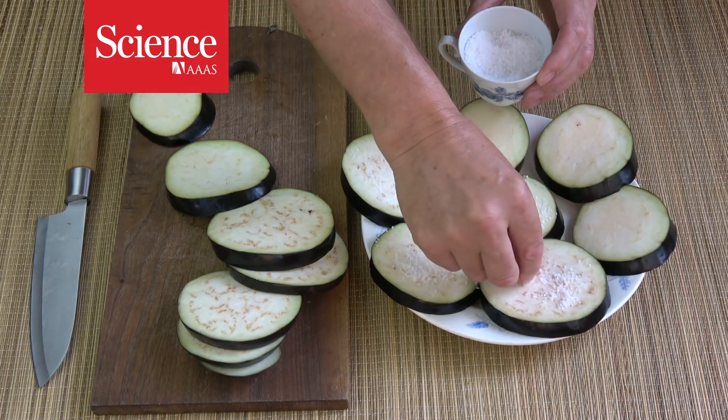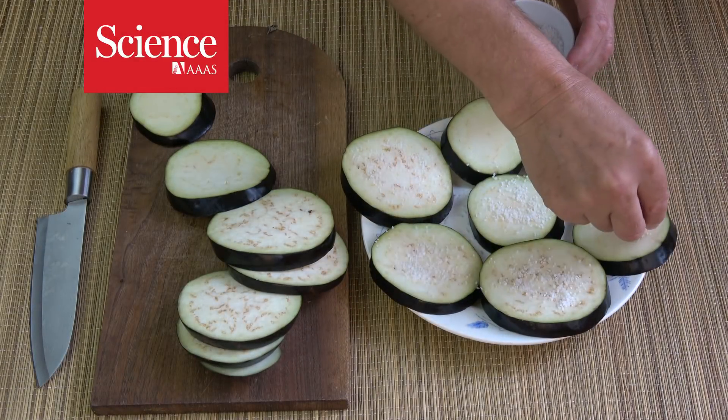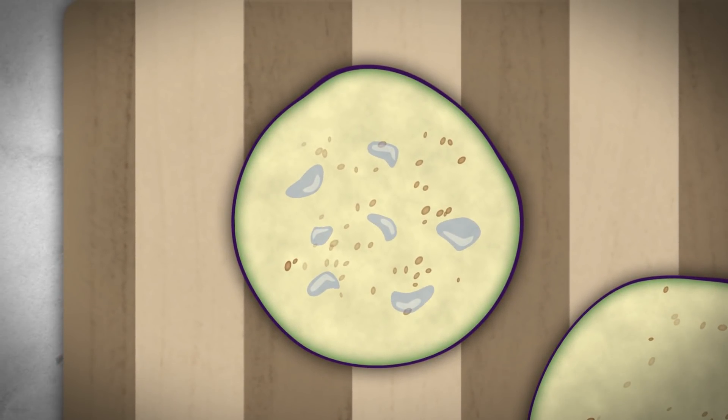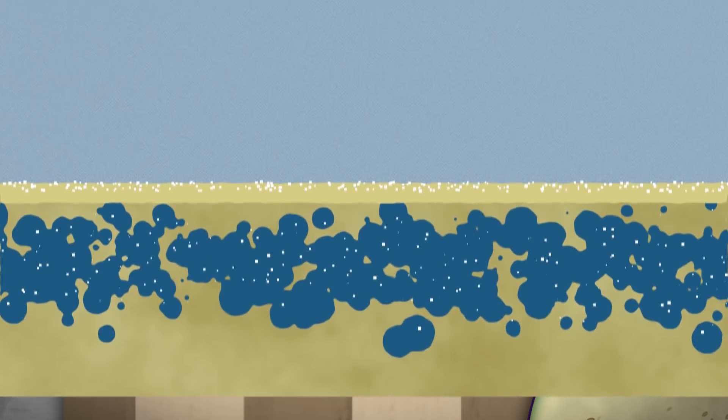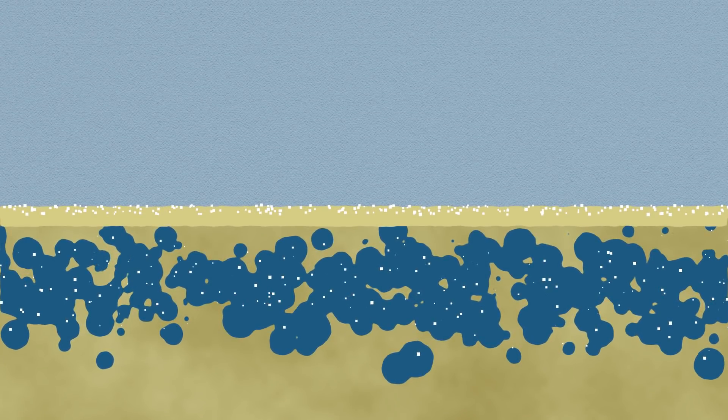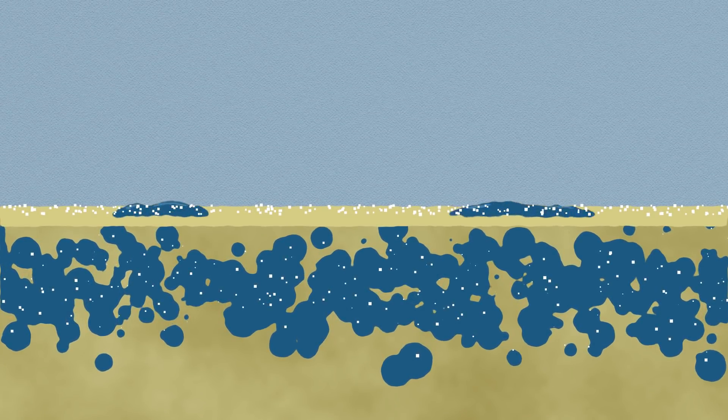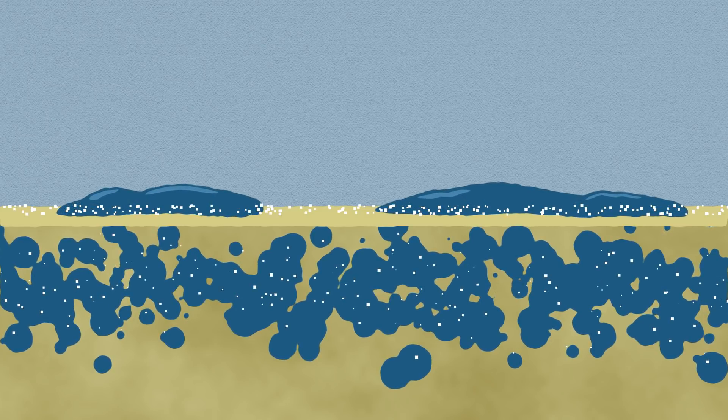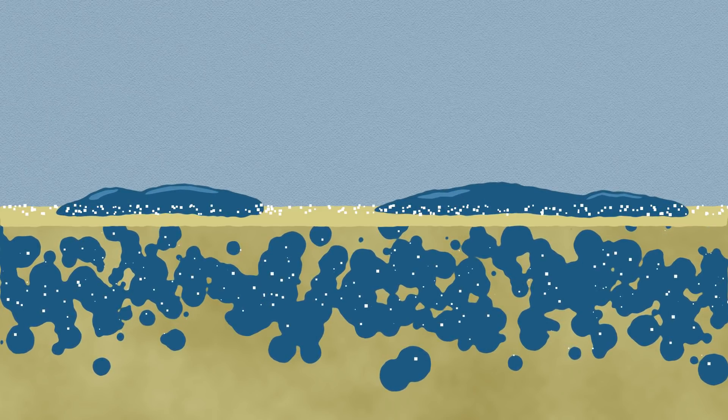Nature loves balance. Ever sprinkle salt on a piece of eggplant? Over time, the eggplant starts to sweat out water. This happens because there's a different ratio of salt to water on the surface versus inside the eggplant. So water seeps out onto the surface to try and equalize how salty the water is inside and out.